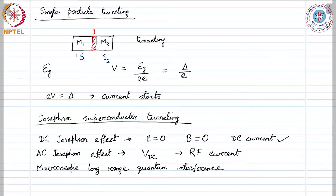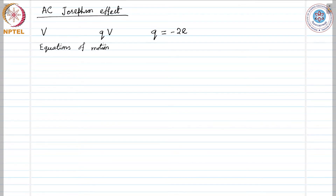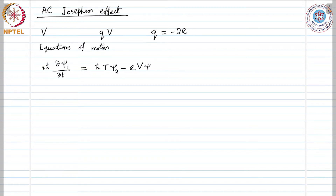So, the left side we imagine in this picture as the potential minus e·V and the right side at plus e·V potential. Then the equations of motion would become: i·ℏ·(∂ψ₁/∂t) = ℏ·T·ψ₂ − e·V·ψ₂.